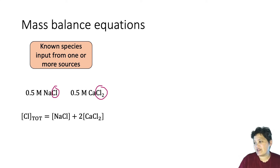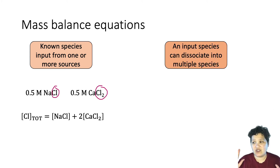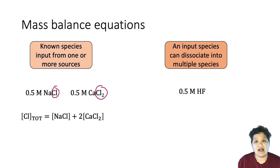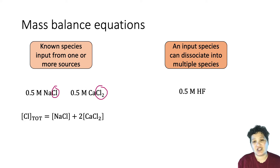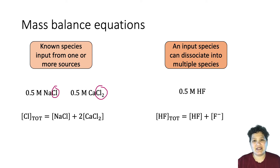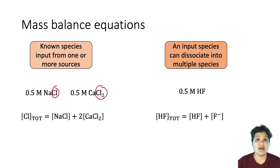The other time you need to think about a mass balance equation is if you're putting something in that can break apart into different things — usually acid-base chemistry, though it could also be complexation. For example, if we made a 0.5 molar solution of hydrogen fluoride, a weak acid, some of that HF would lose a hydrogen and leave behind the conjugate base fluoride ion. The total amount of HF in the system equals the concentration of the protonated acid plus the concentration of the conjugate base.